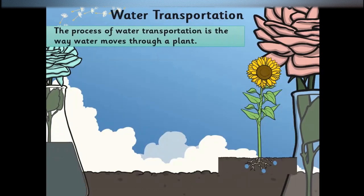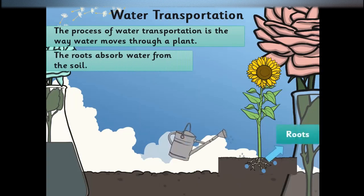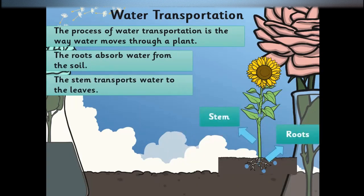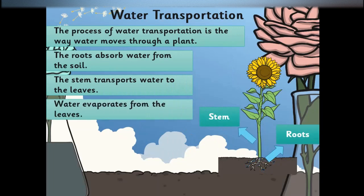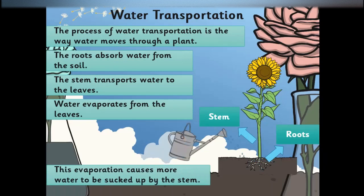The process of water transportation is the way water moves through a plant. The roots absorb water from the soil. The stem transports water to the leaves. Water evaporates from the leaves, and this evaporation causes more water to be sucked up by the stem.